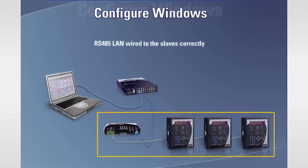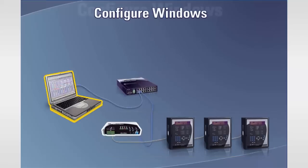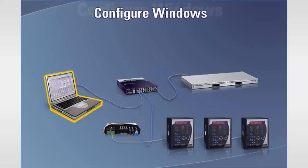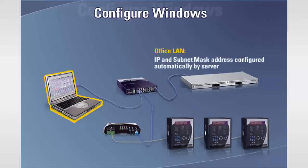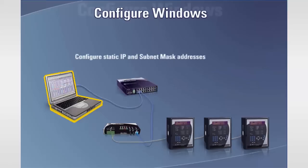We will assume that the RS-485 LAN has been wired to the slaves correctly and each relay has been assigned a unique Modbus slave address in addition to matching baud rates and parity. We will focus on the configuration of the computer and the Multinet. The first step is to configure the computer's IP and subnet mask addresses. Without these addresses, a device cannot communicate over an Ethernet LAN. Within an office LAN, this configuration is normally performed automatically by other computers on the network called servers which are running special software. Relying on a server to perform this function within a protective relaying LAN isn't desirable as a failure of the server could result in failure of the entire Ethernet LAN. A provision is made within the computer to configure permanent, or static, IP and subnet mask addresses such that a server isn't required.